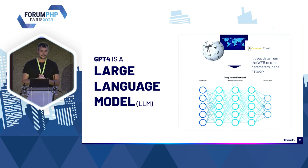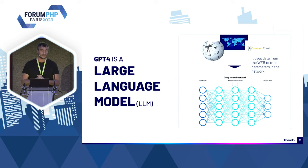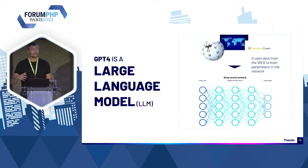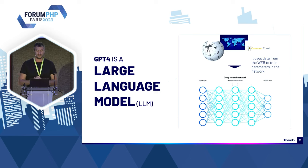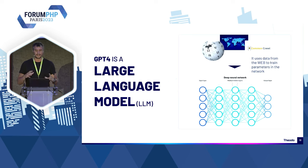Rapidement, comment marche GPT ? C'est quoi under the hood ? C'est ce qu'on appelle un Large Language Model — LLM — et c'est un énorme réseau de neurones. Pour arriver à des résultats aussi impressionnants, ils ont fait deux choses : ils ont augmenté énormément la taille des réseaux de neurones avec une nouvelle structure développée par Google, et ils ont aussi augmenté énormément la taille du jeu de données qui permet de les entraîner.